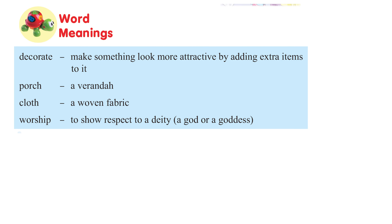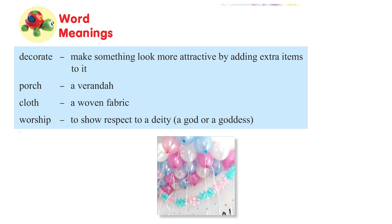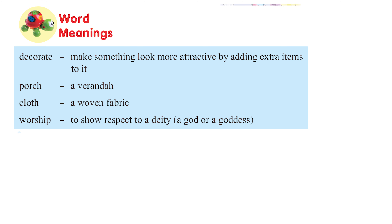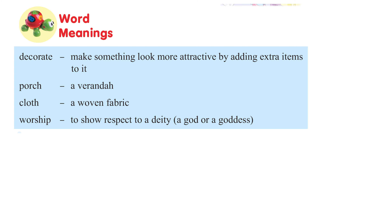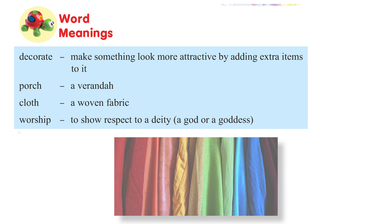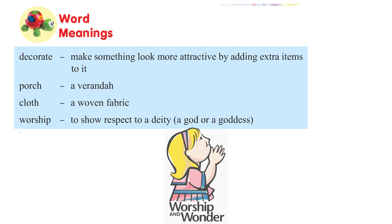The first word is 'decorate' — to make something look more attractive by adding extra items to it. We all love to decorate our homes for special occasions. Next is 'porch', which means a veranda. Kids love to play on the porch. 'Cloth' is a woven fabric. 'Worship' is to show respect to a deity, a god or a goddess.